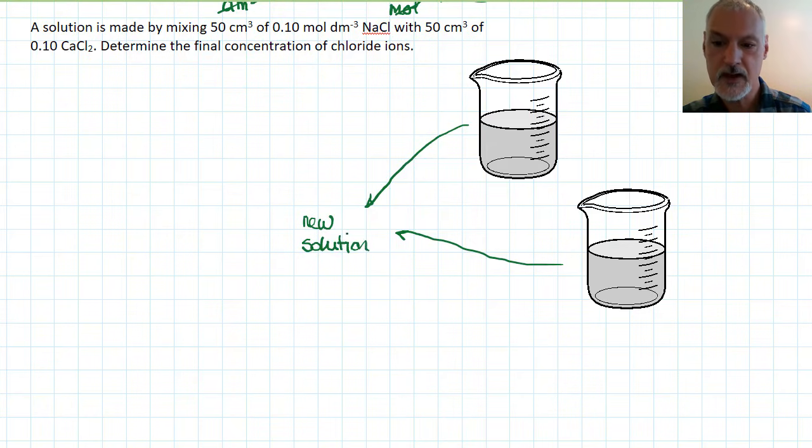And what I'm asked about this new solution is: what's the concentration of the chloride ion in this solution? Now the number of moles of chloride ions - I don't know how I'm going to get that yet - but what will happen is there will be some chloride ions from this solution, I'll call them N1.